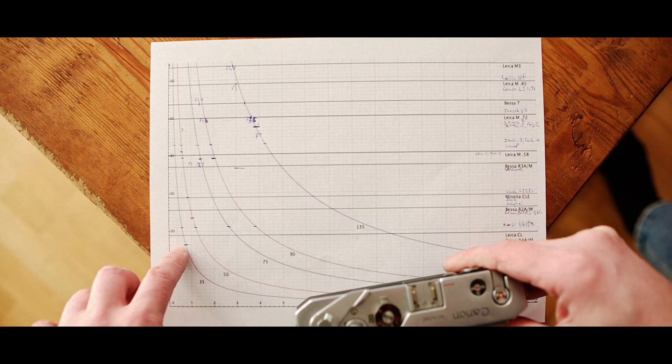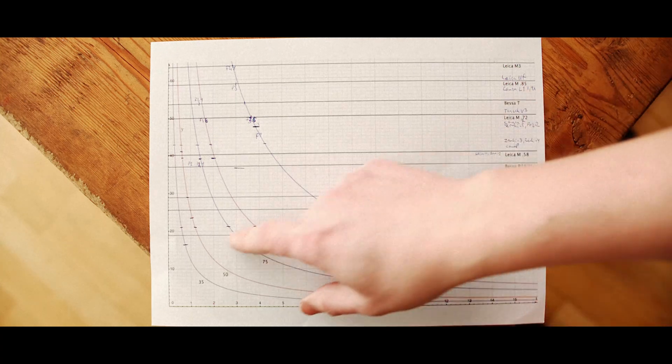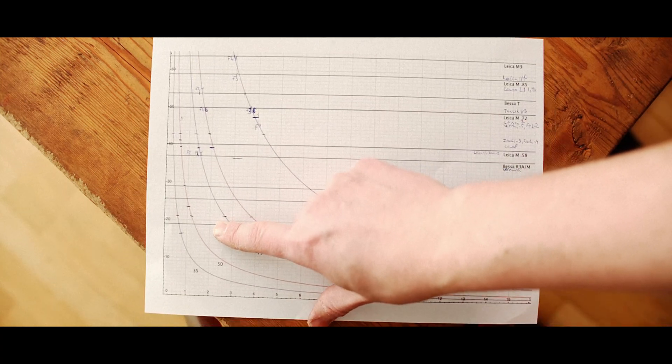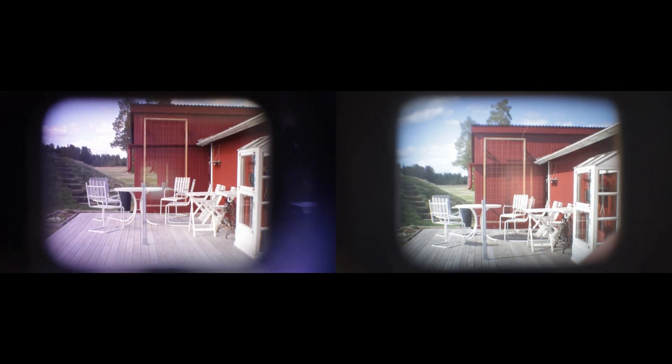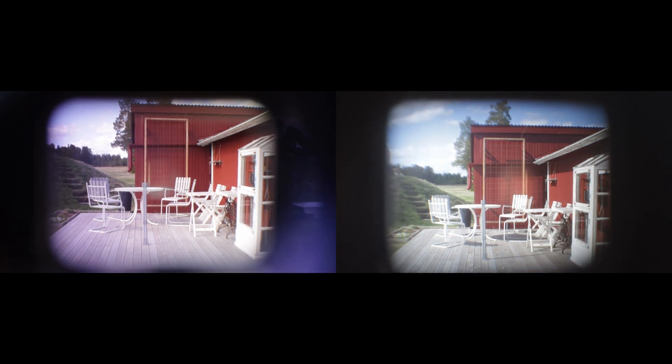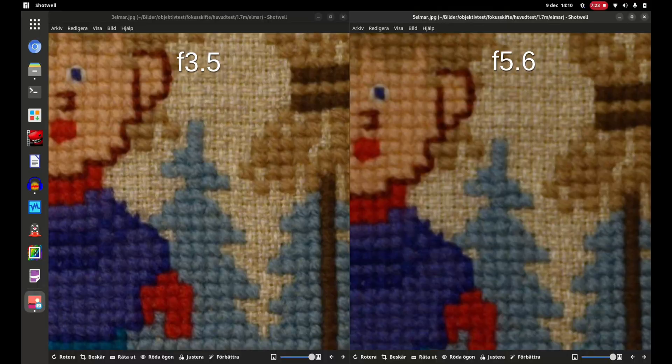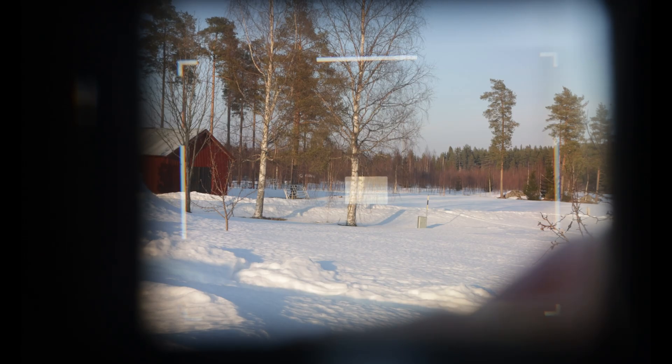To conclude. The effective base length should be more than sufficient in most rangefinders when using lenses 50mm and wider. A longer base length can however make the experience better. But other factors probably matter more for focusing accuracy. Like camera movement when recomposing, focus shift in the lens, rangefinder calibration, and the quality of the focusing patch.